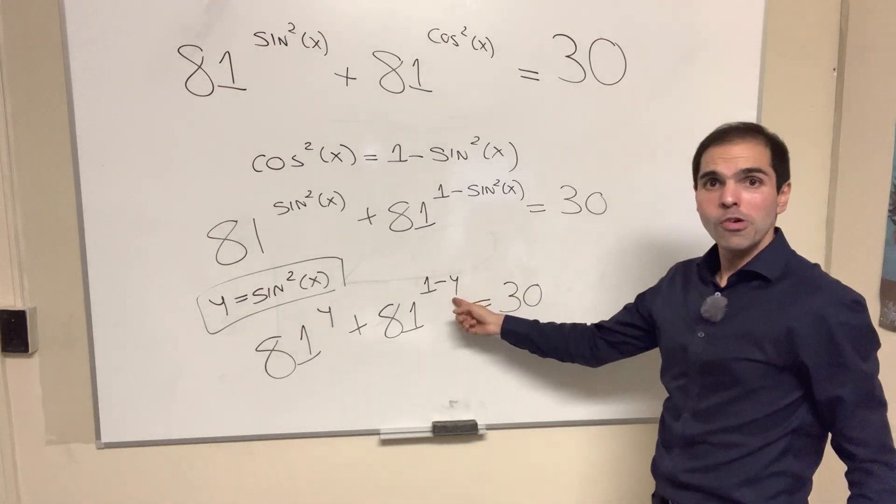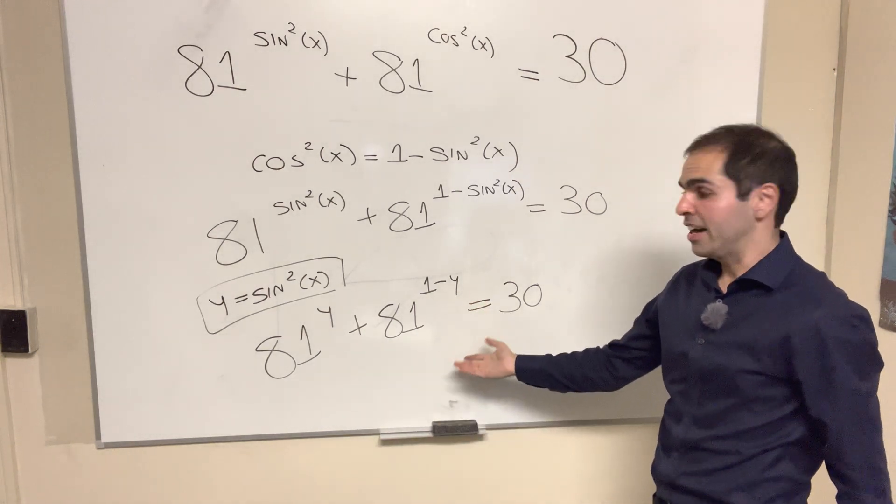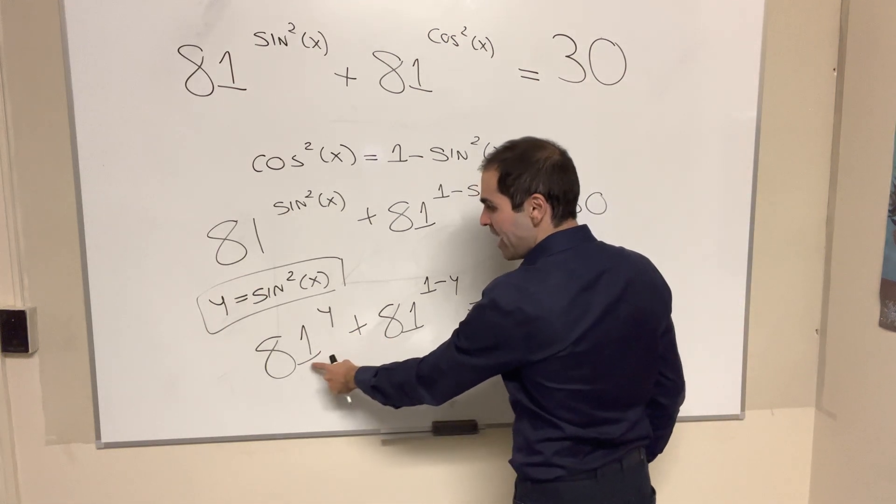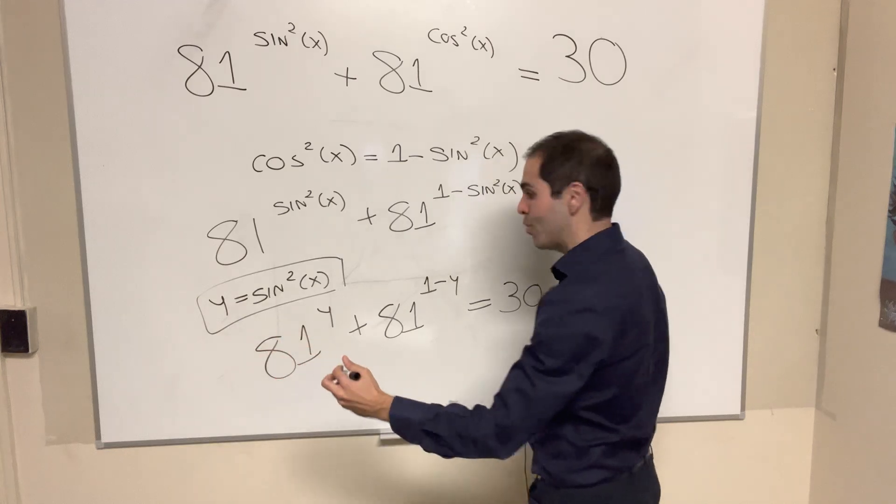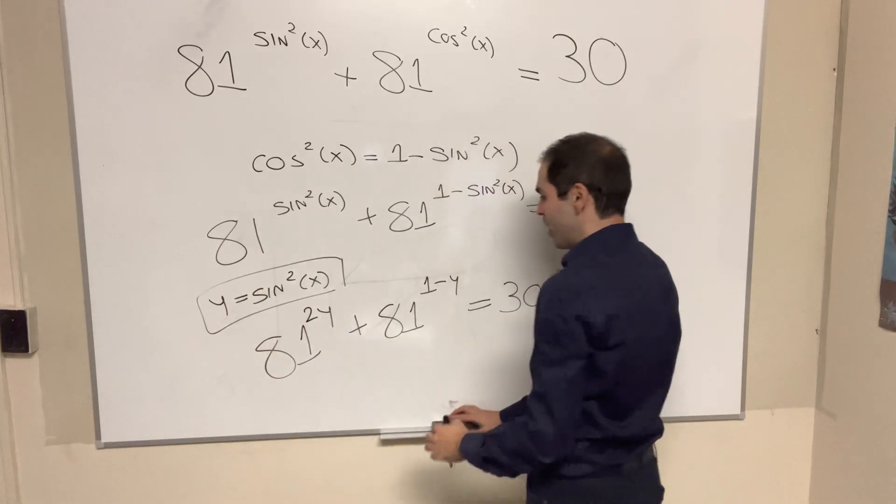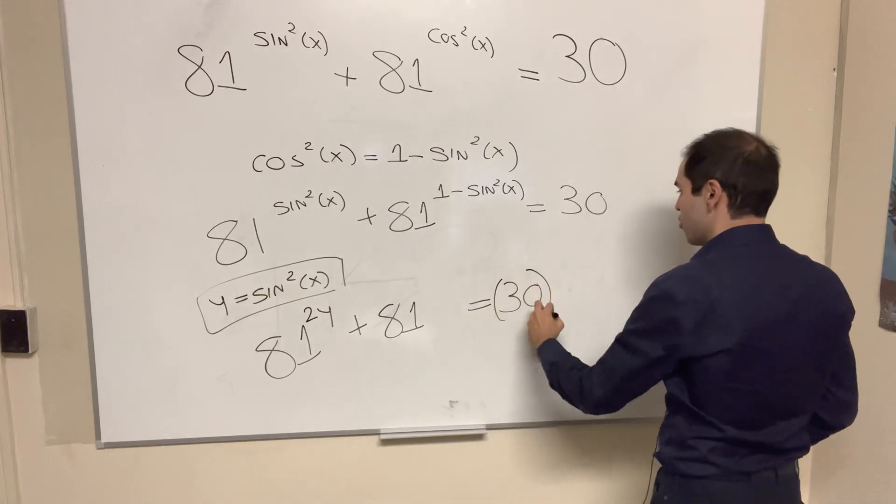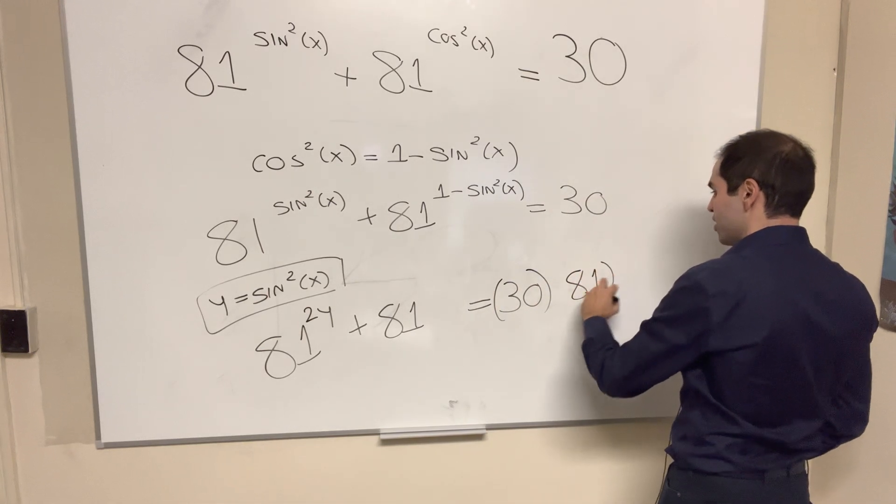And how about we multiply both sides by 81 to the y. Then this becomes 81 to the y plus y, so 2y. This then just becomes 81. And then we get 30 times 81 to the y.